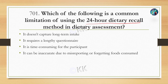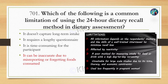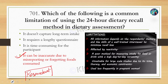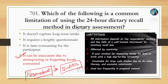The correct option is Option D: it can be inaccurate due to misreporting or forgetting foods consumed. In the 24-hour recall method, the individual is required to recall what food was consumed in the last 24 hours. The main limitation is that it can be misreported — the accuracy is in the hands of the patient. The patient may misreport or forget something, which is a limitation.